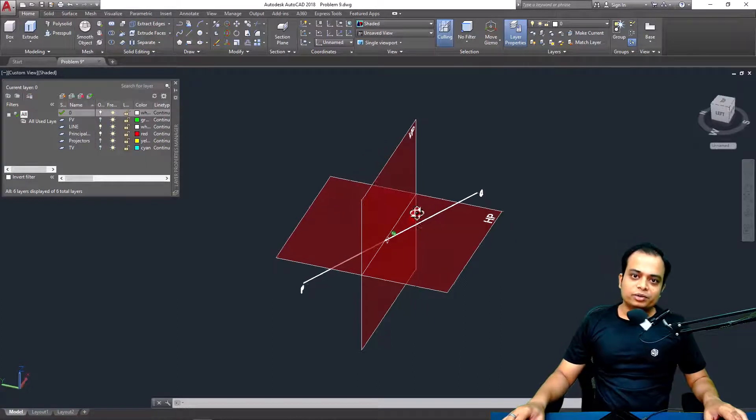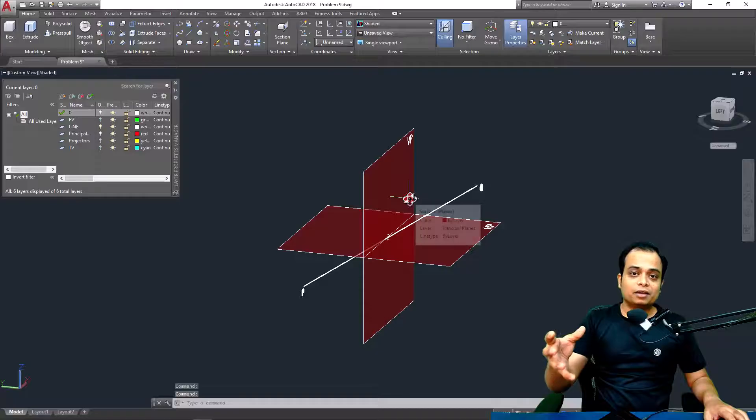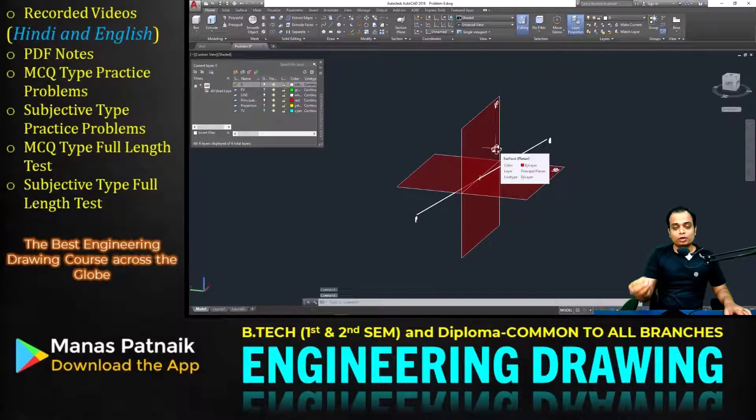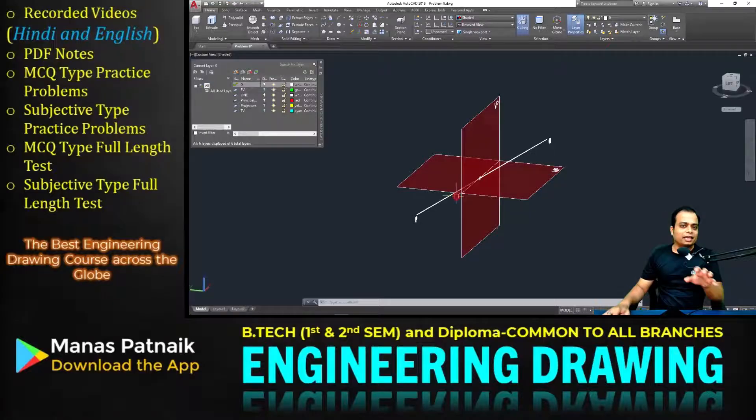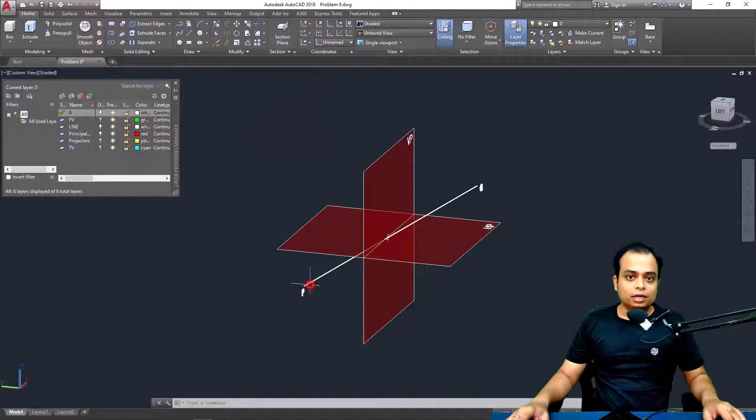A few days ago, one of my students named Aditya sent me this problem. Aditya happens to be a student who has enrolled in the Engineering Drawing course for the VTech program. He said, here is a line which is inclined to both HP and VP. At the same time, one end of the line is in the third quadrant.